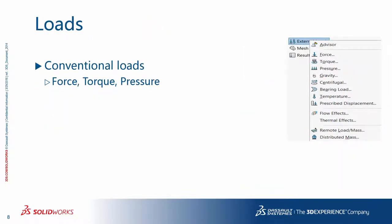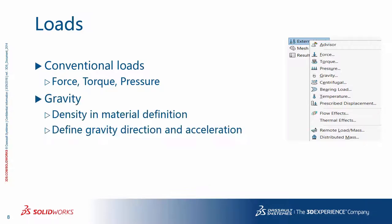In SOLIDWORKS simulation, you can have conventional loads like force, torque, and pressure. If you are applying gravity, the density is taken from the assigned material property. You just need to define the direction of gravity and the value of gravitational acceleration.